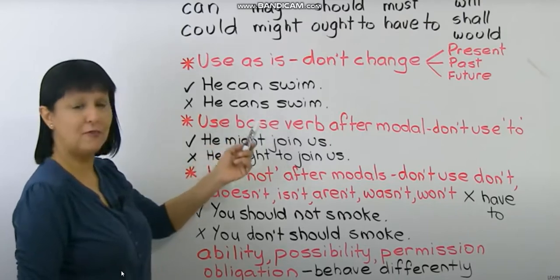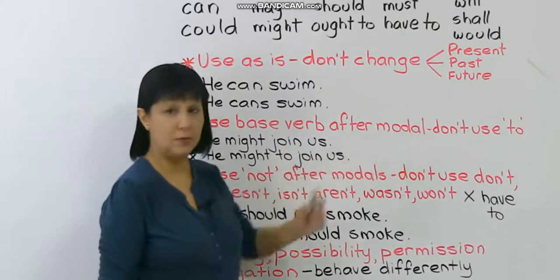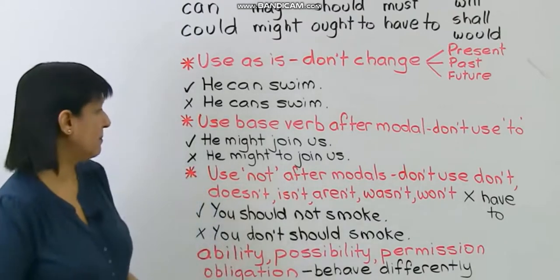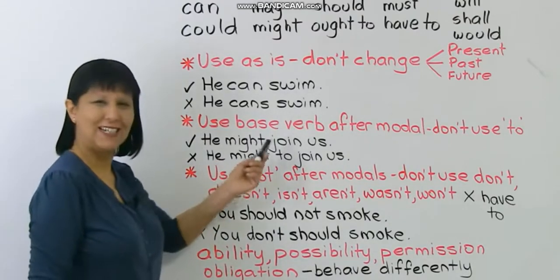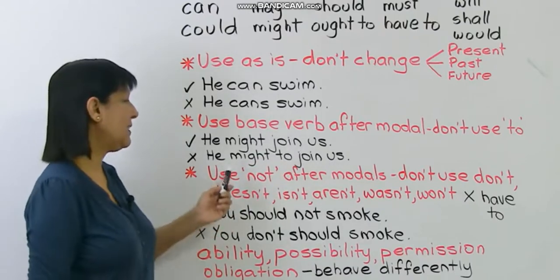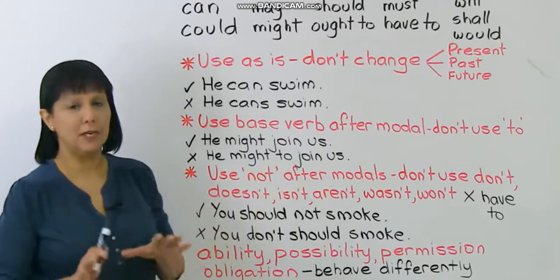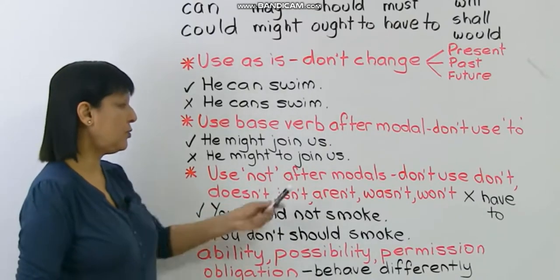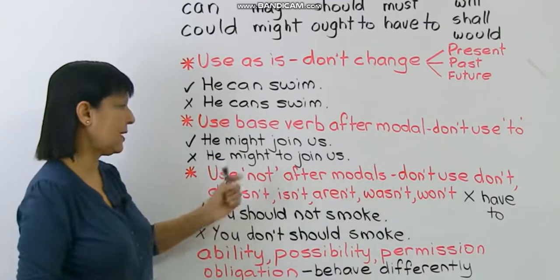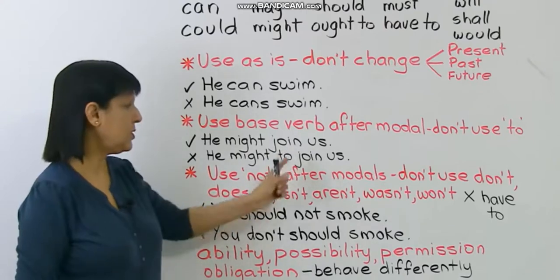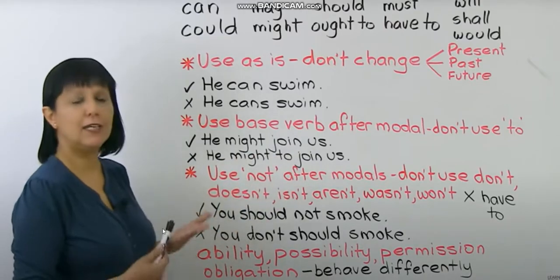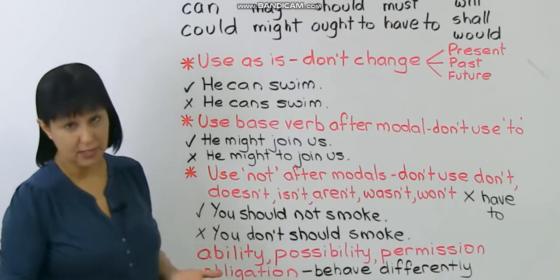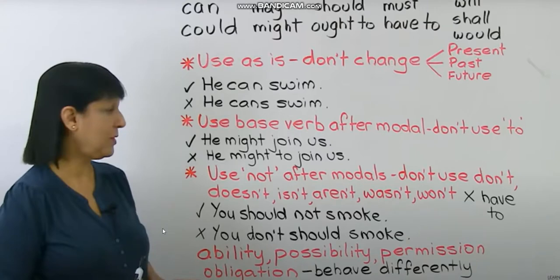Rule two: use the base form of the verb after a modal — don't use 'to.' For example, you should say 'he might join us,' not 'he might to join us.' This is a really common error. Don't use the full infinitive 'to join' after a word like 'might.' Just use the base form of the verb: 'join.' He might join us, he could join us, he should join us, he must join us.